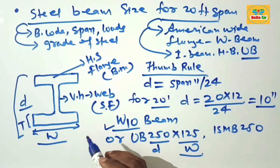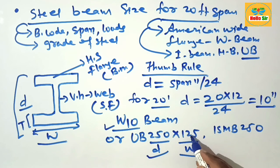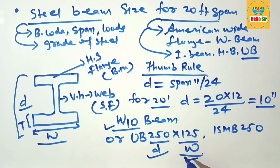of the flange. For a 20-foot span, you need a UB 250x125 beam. Thank you.